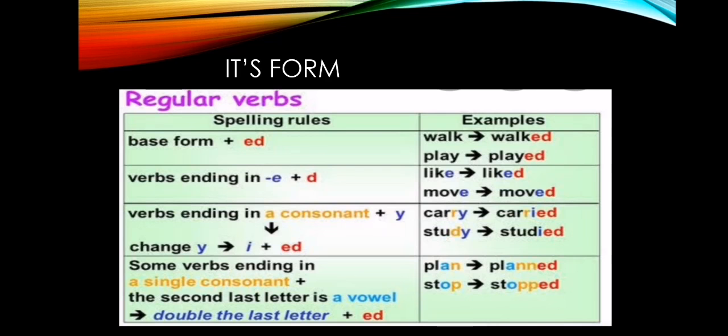Now, verbs. We have two kinds of verbs: regular and irregular. Regular verbs have a rule — spelling rules. The base form plus -ed. Like 'walk' becomes 'walked', 'play' becomes 'played'. We add -ed.